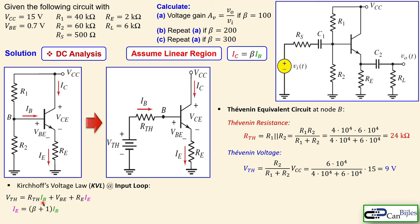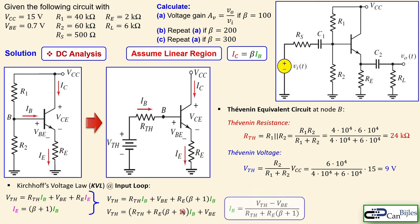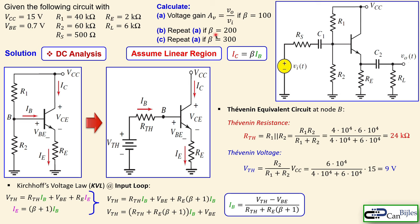We apply Kirchhoff's voltage law at the input loop. The Thevenin voltage equals the voltage across R_Thevenin by Ohm's law, plus VBE, plus the voltage across RE. Since the emitter current equals (beta + 1) times the base current, we substitute and collect terms for IB into one parenthesis, yielding a key equation for IB that will be reused for other beta values.